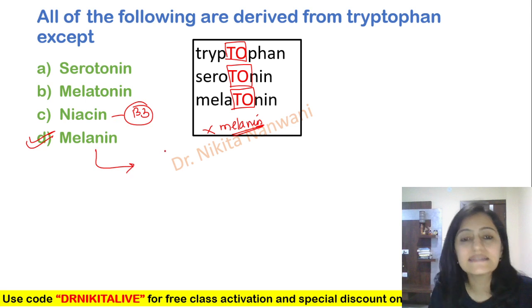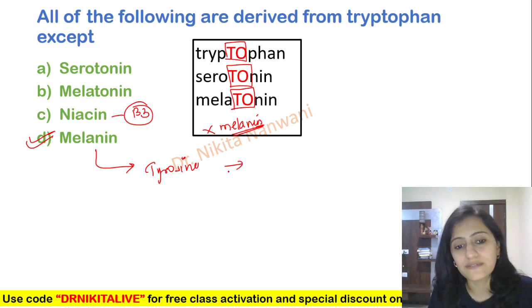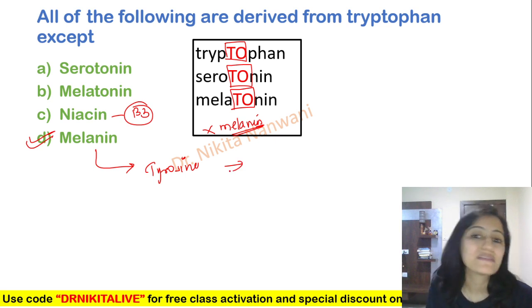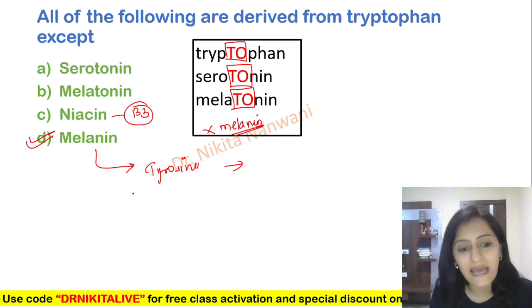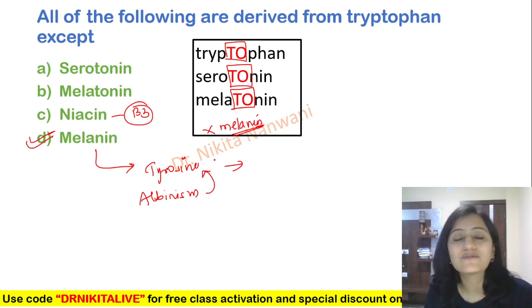Melanin is derived from which amino acid? Melanin is derived from tyrosine. And that is why the absence of melanin — that is basically albinism — is a defect in tyrosine metabolism.